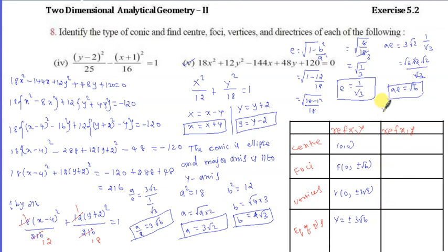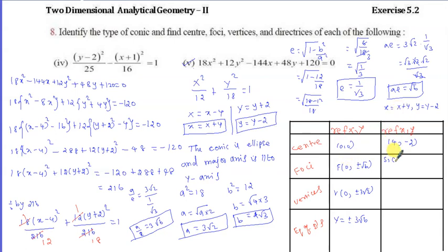Now we transform back using x equals X plus 4 and y equals Y minus 2. The center in original coordinates: X = 0 gives x = 4, and Y = 0 gives y = minus 2. So the center is (4, minus 2). For the foci: X = 0 gives x = 4, and Y = plus or minus root 6 gives y = root 6 minus 2 and y = minus root 6 minus 2.